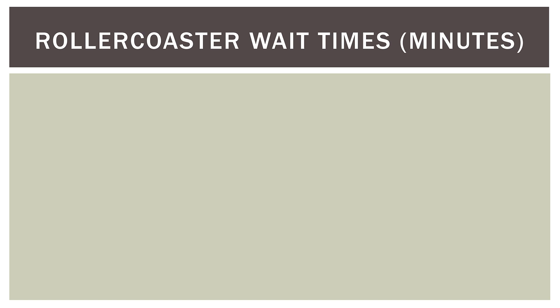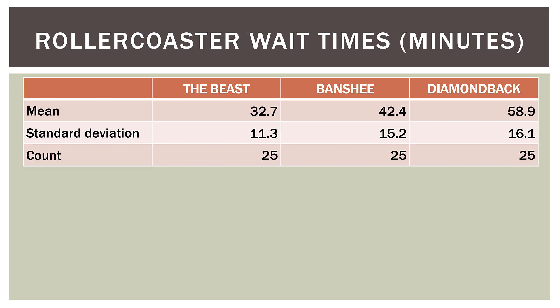Here is our data — roller coaster wait times in minutes. For the Beast, the mean wait time across 25 observations was 32.7 minutes with a standard deviation of 11.3 minutes. The Banshee had a mean wait time of 42.4 minutes with a standard deviation of 15.2 minutes. The Diamondback had a mean wait time of 58.9 minutes with a standard deviation of 16.1 minutes. They all have 25 observations, giving us 75 total observations — 25 for each roller coaster — which we can put into Excel and run a simple one-way ANOVA.